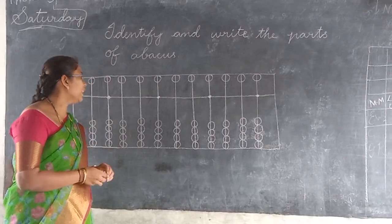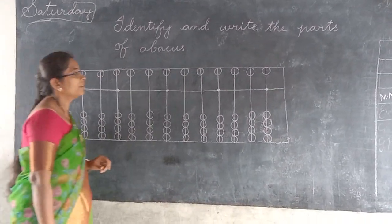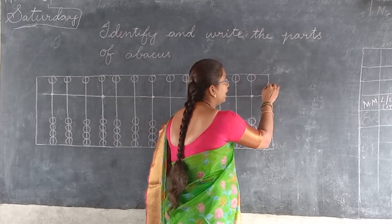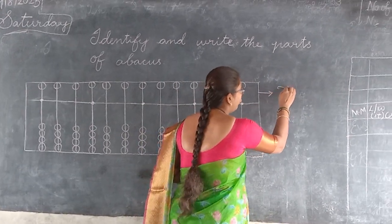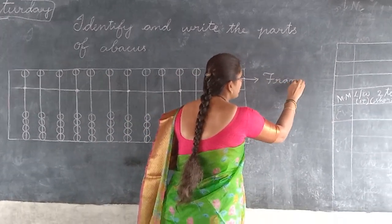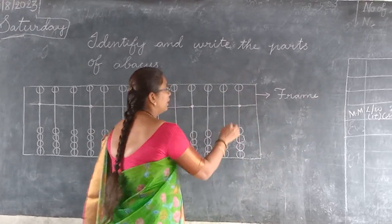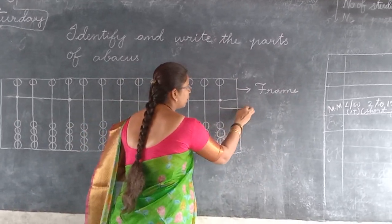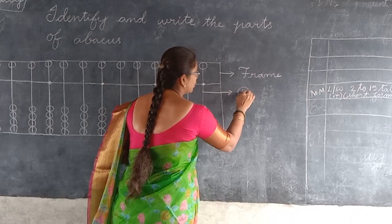Now tell the parts of the abacus. The first part is the frame. The next part is the rods.